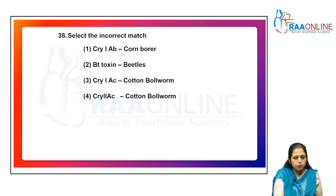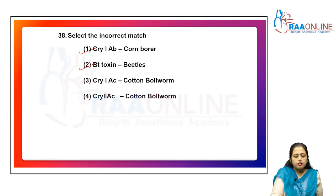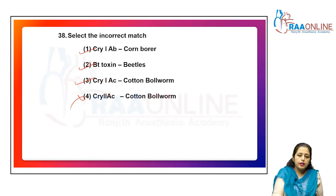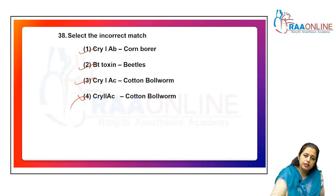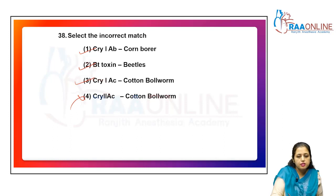Regarding Bt toxin cry gene matches: cry1Ab is related to corn borer — correct; cry1Ac is related to cotton boll worm — correct; cry2Ac and cotton boll worm is the incorrect match. The answer is option 4.